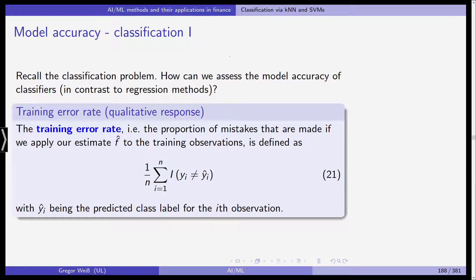Now, if you recall the classification problem, we are always led to the question: how can we assess the model accuracy of a given classifier? That is, is it able to classify a new observation correctly or does it classify it into a wrong class? This is obviously in contrast to regression methods where we've already seen measures of model fit. It's clear that for classification problems, this looks a little bit different. So we'll start with the training error rate, done for qualitative responses, for example, default, non-default or contract termination, no termination.